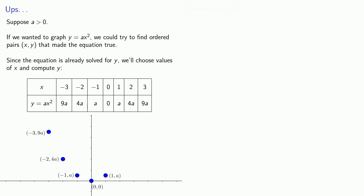And similarly for two, four a, and three, nine a, and this gives us the general shape of the graph. And if we graph a few million more points, we'll fill out the shape.